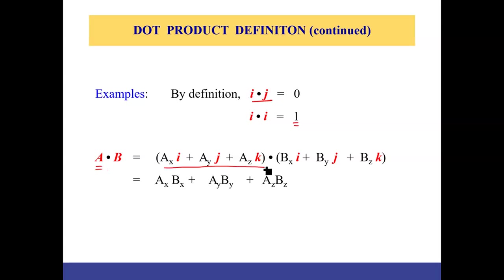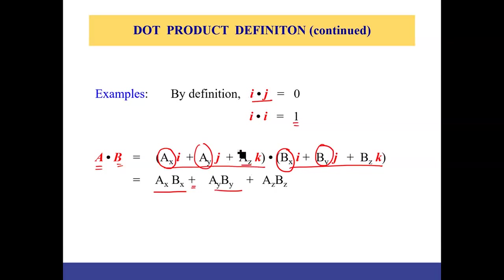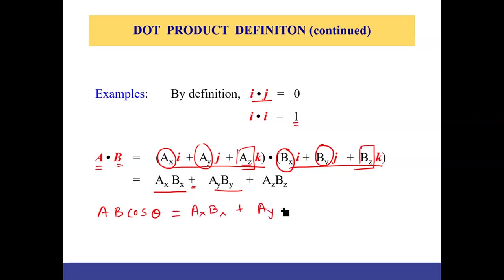For Cartesian vectors A and B, the dot product can be calculated by multiplying corresponding components: A·B = AₓBₓ + AᵧBᵧ + A_zB_z. This is one equation for the dot product. The second equation is the magnitude of A times the magnitude of B times cosine of angle theta, which equals AₓBₓ + AᵧBᵧ + A_zB_z.